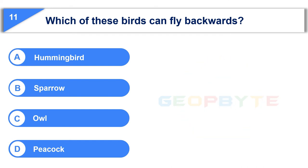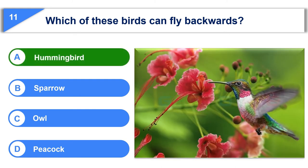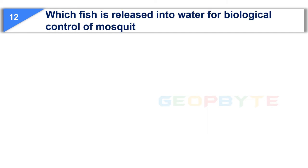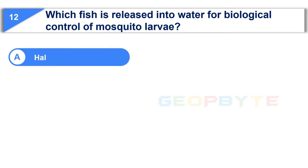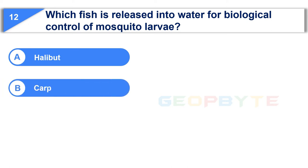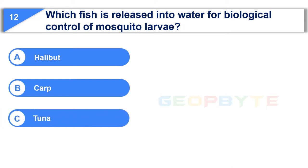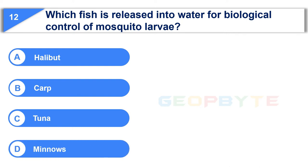Your time is up and the correct answer is Option A: Hummingbird. The 12th question is: which fish is released into water for biological control of mosquito larvae? Option A: Halibut. Option B: Carp. Option C: Tuna. Option D: Minos. Your time starts now.